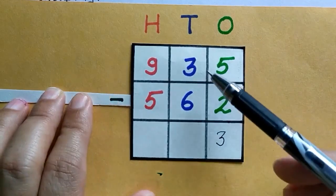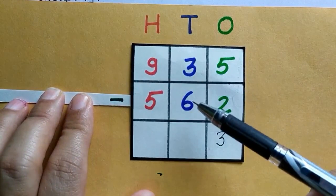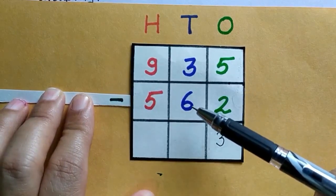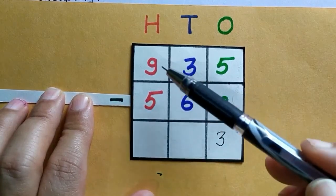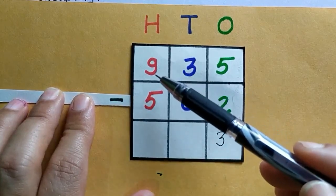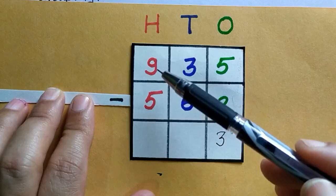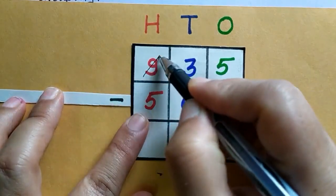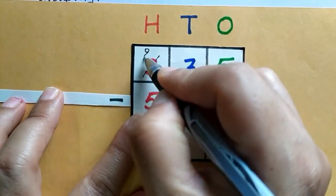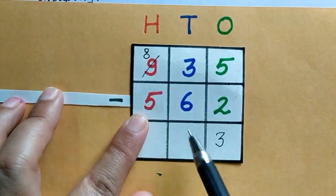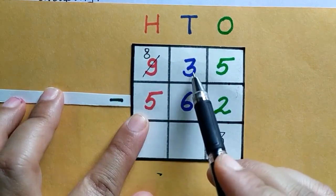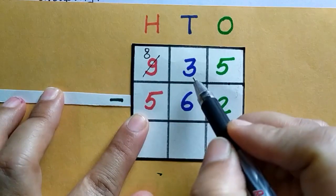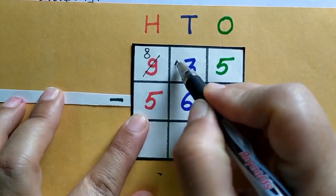Now at 10th place there are 2 digits: 3 and 6. So 30 minus 60 is not possible, so we will take borrow from 100th place. At 100th place there is 9, means it is 900. We will take borrow and it will remain 800 because it is 100th place, and after taking borrow, 3 will become, or you can say 30 will become 130.